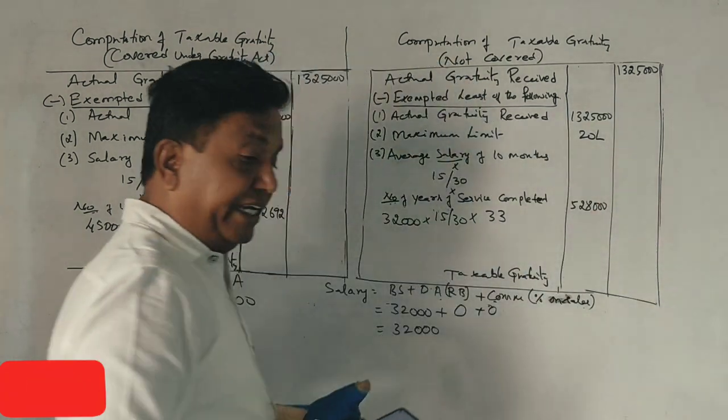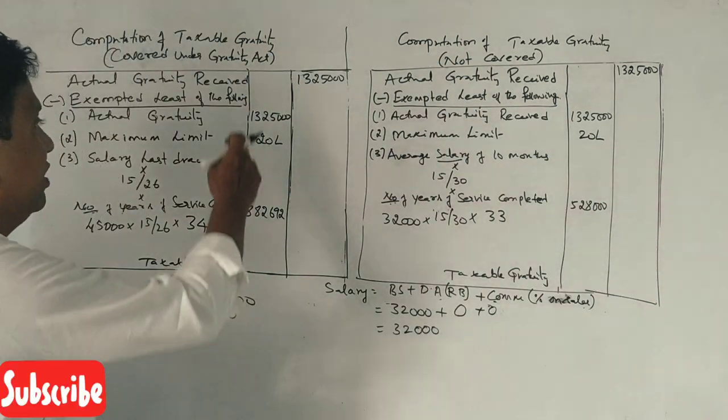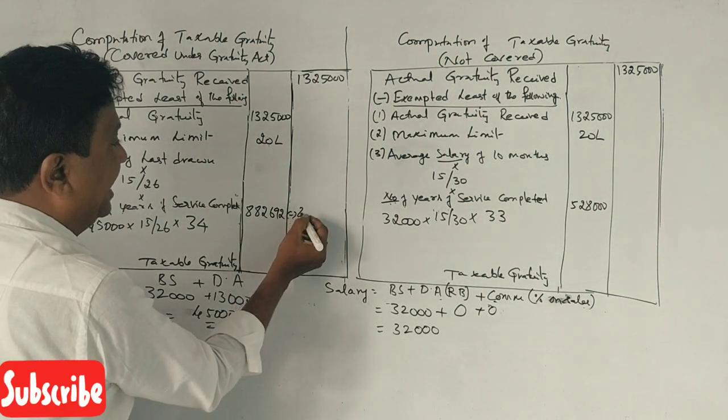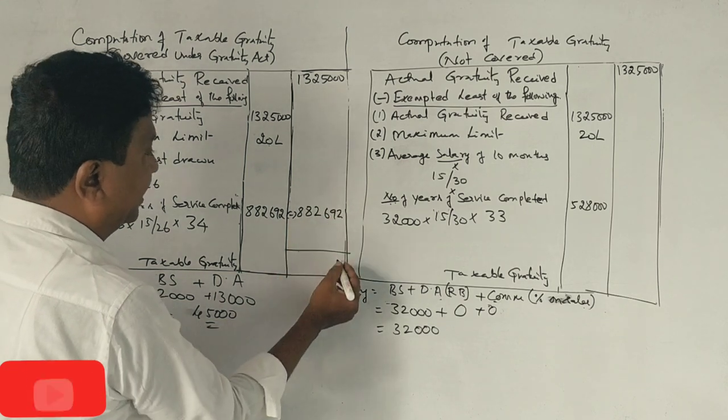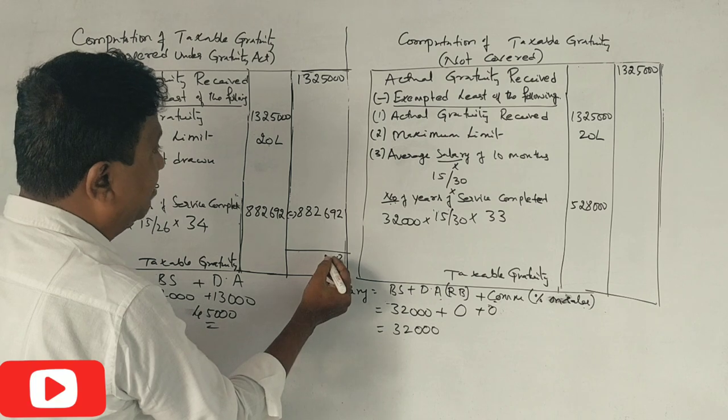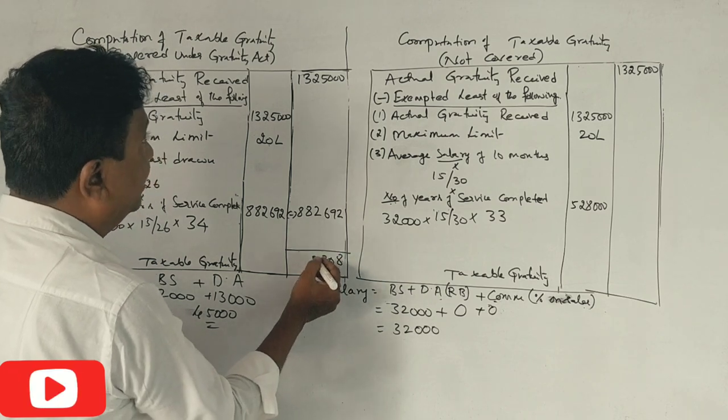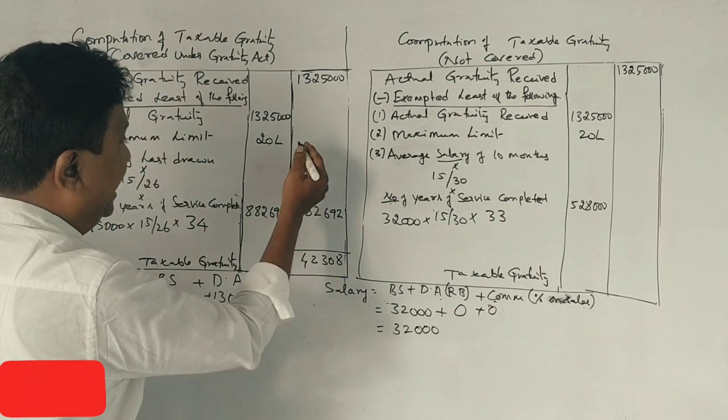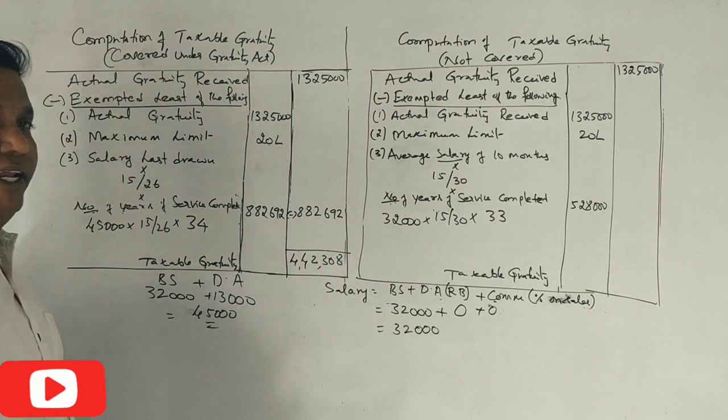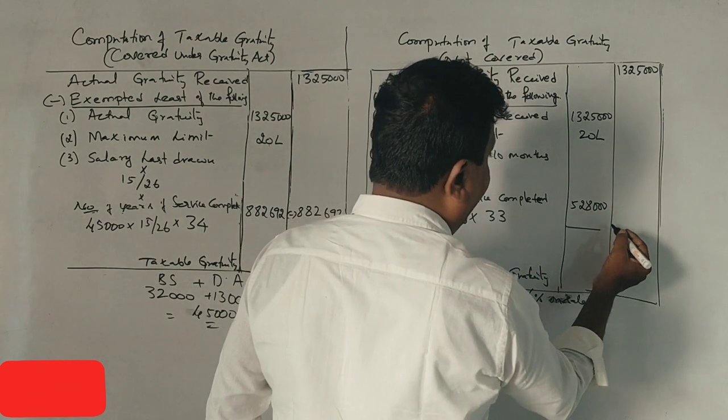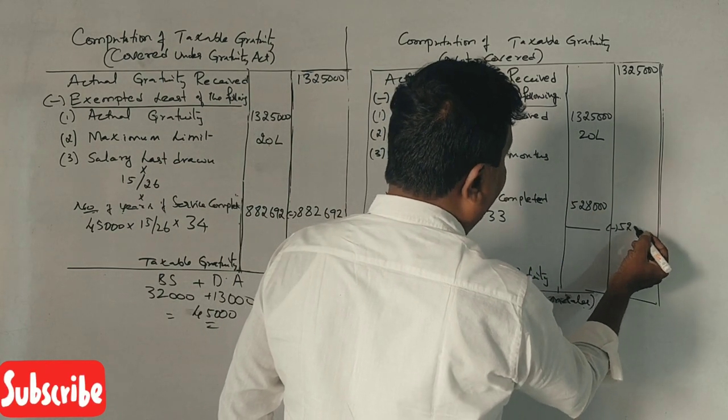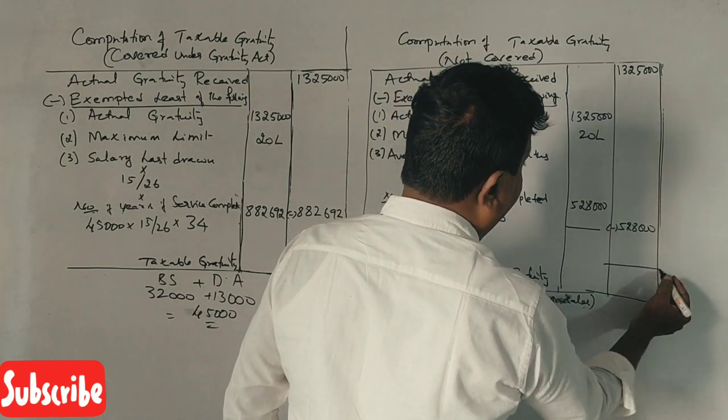If you have covered under the rules, the exemption is 8,82,692. So, the taxable amount will be 4,42,308. If not covered, you can take 5,28,000 as exemption.